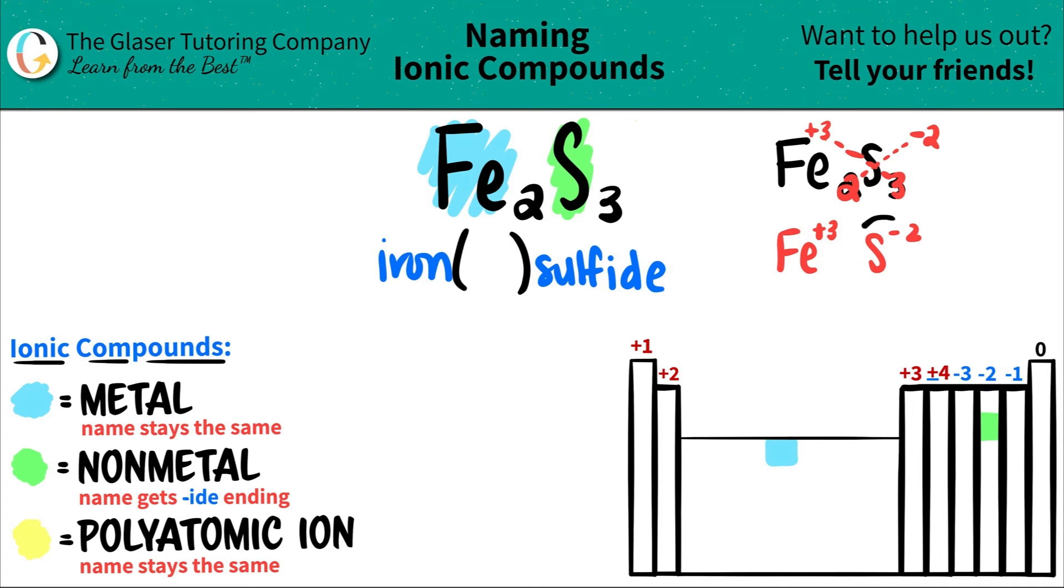So just do a double check. Does this make sense? Does sulfur want to gain two electrons or be a negative two charge? And yeah, the sulfur is in the group in which it has a negative two oxidation charge. So if this checks out, this has to check out, and the charge for iron was a plus three.